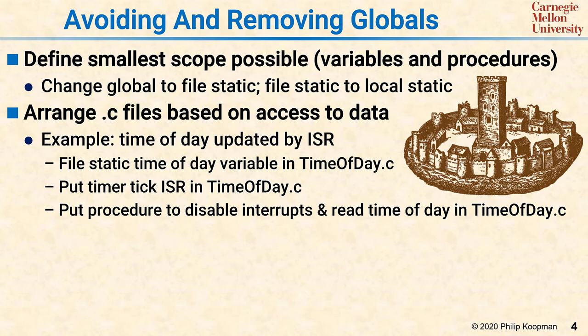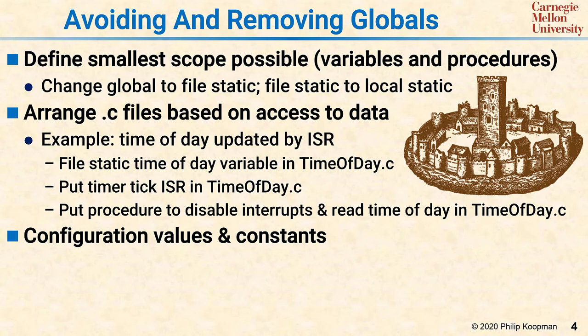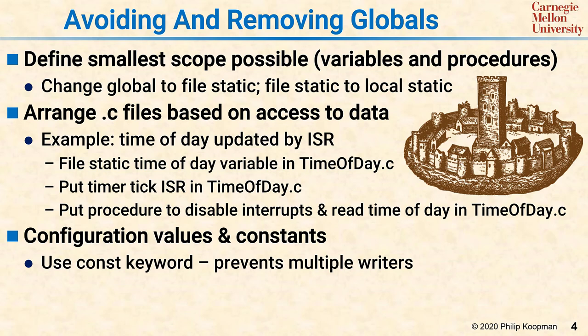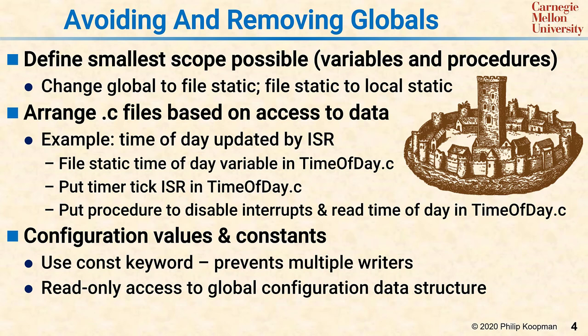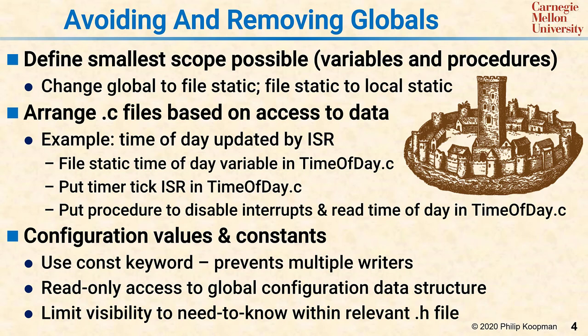A common special case is dealing with configuration variables and constants. Constants in general are less risky because they cannot be changed if you use the const keyword — the compiler will complain if you try to change them. So using the const keyword before unchangeable globally visible variables is an extremely valuable practice. If you have configuration values, make sure you write them from only a single configuration setting .c file and then provide a read-only access method for use by other parts of the program. In either case, you should limit visibility to only code that really needs to see them, using a .h file for each related set of constants and a .h file for the access method to access configuration values. In general, if your code has a file named globals.c or globals.h, you should probably be doing a better job of managing the visibility of your variables.